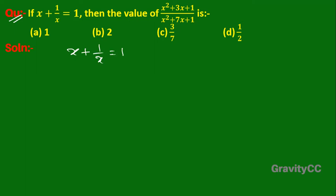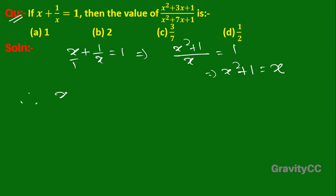From the given condition, multiplying through we get x squared plus 1 equal to x. Therefore, x squared plus 3x plus 1 upon x squared plus 7x plus 1 can be rewritten by substituting x squared plus 1 equals x.